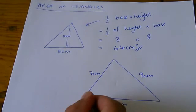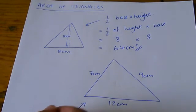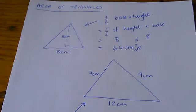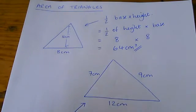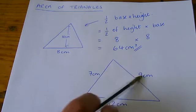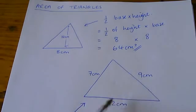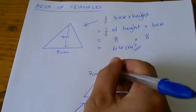On this question here, if I try to use half of the base times the height, first of all, it's not clear which of these is the height. And, secondly, actually neither of them are going straight up from the base.